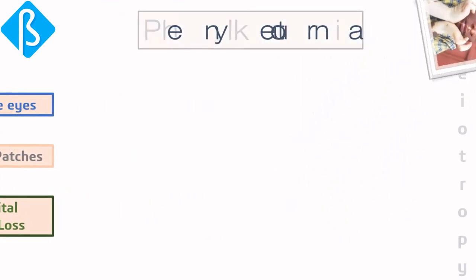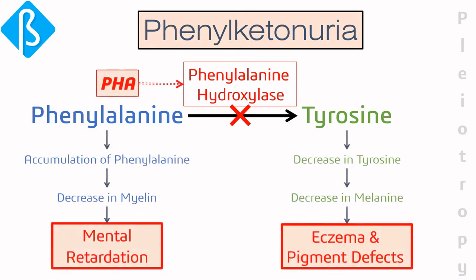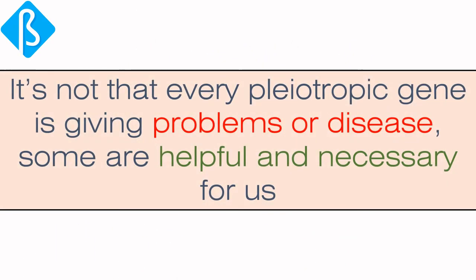The most widely cited example of pleiotropy is phenylketonuria (PKU), which is caused by deficiency of the enzyme phenylalanine hydroxylase that converts phenylalanine to tyrosine. A defect in the PAH gene coding for this enzyme results in many phenotypes like mental retardation, eczema, pigment defects, and of course PKU disease.